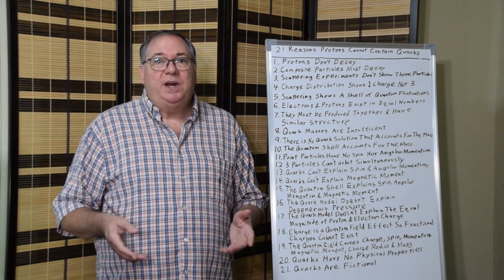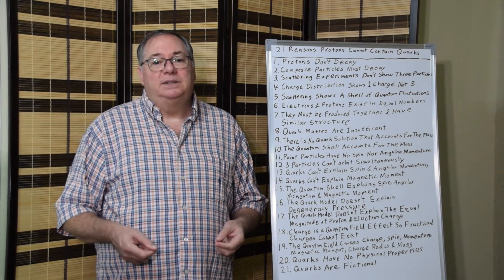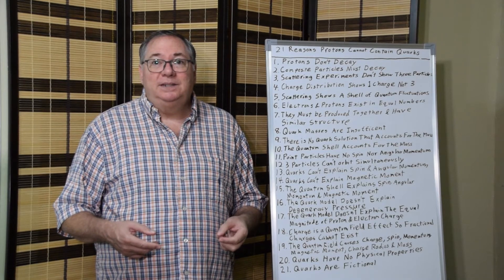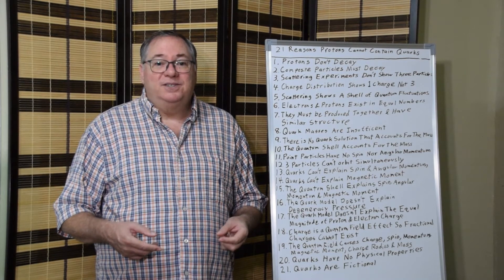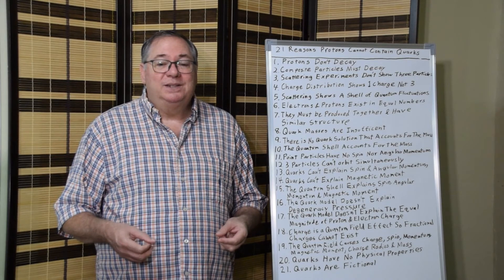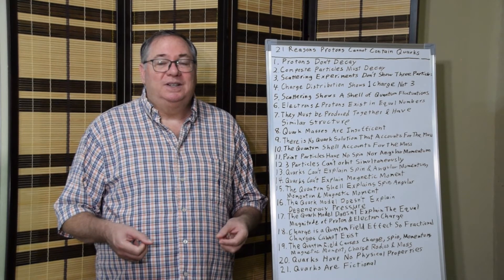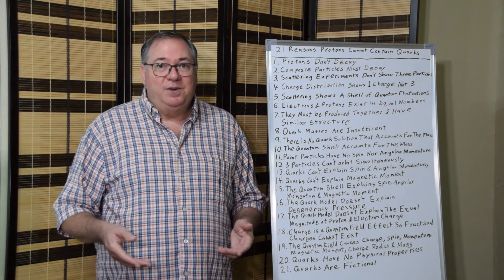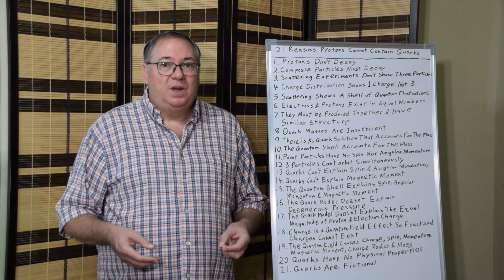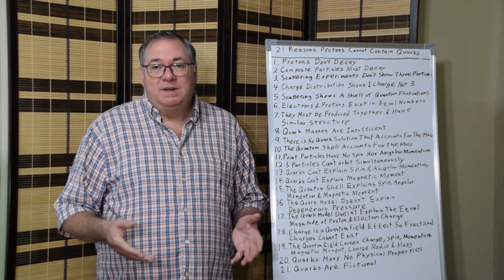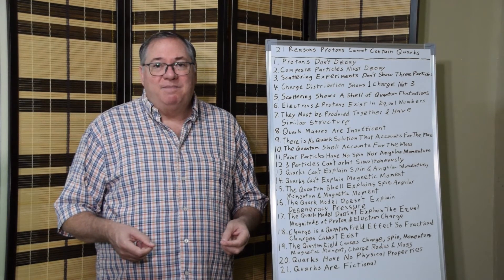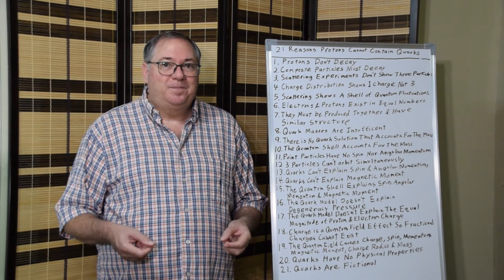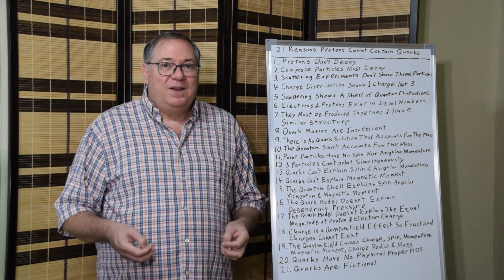So 20, quarks have no physical properties. And what do you call something with no physical properties? Fictional. 21, quarks are fictional. None of the properties of the protons have anything to do with quarks. So it's a fictitious numerological model.